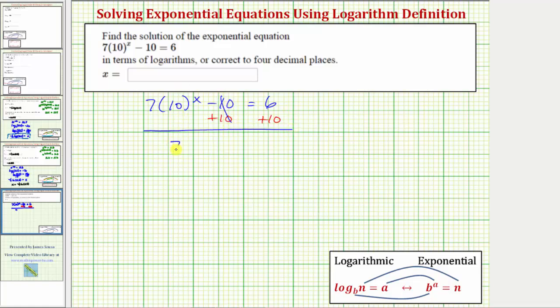Simplifying, we now have seven times 10 raised to the power of x equals 16. Next, we'll divide both sides by seven to isolate 10 raised to the power of x.